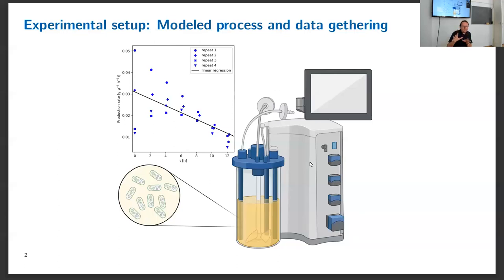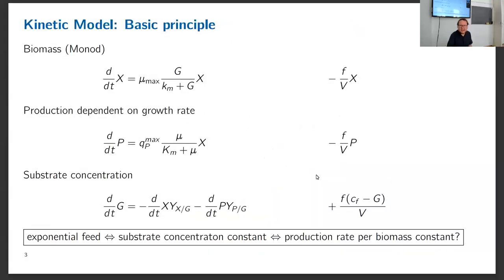If we want to optimize the process, we have to understand it. So what we do is kinetic modeling. Before I go into the model I use myself, I will give some basic principles. As a reminder, the easiest kinetic model is if I have biomass and production depending on the growth rate, and I still need some equations for the substrate to have a closed system.